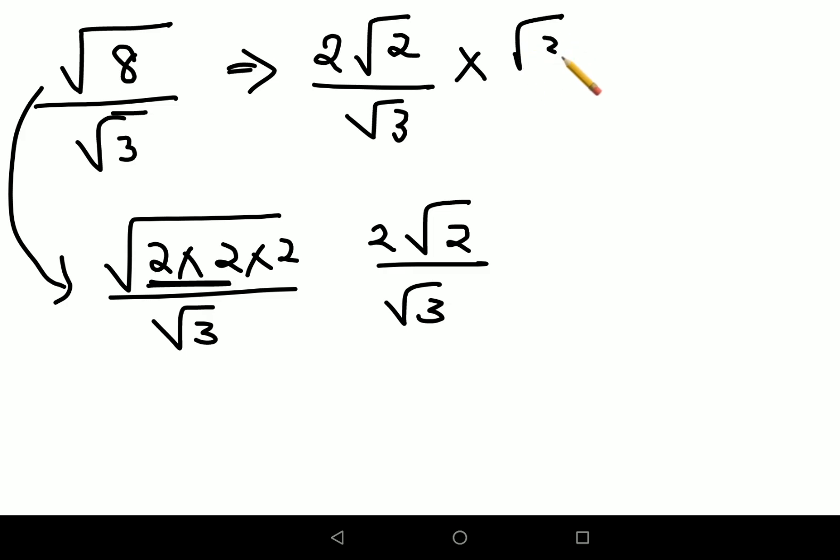Then again we'll do the rationalizing part, so that gets you 2 upon 3, then √2 times √3 will get you just √6. You can literally do this in one single step if you had the clear-cut understanding that √8 can be written as 2√2. Then all you had to do was just multiply the numerator as well as your denominator by √3.